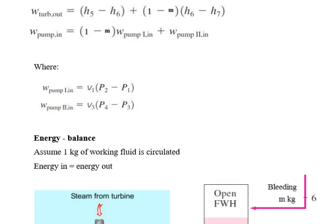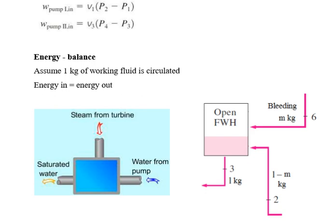Assuming 1 kg of working fluid is circulated, we consider the energy in and energy out. In the open feed water heater, some steam is extracted from the turbine — this process is called bleeding — and enters the open feed water heater. Then 1 minus m kg of condensate is taken from the condenser and mixed in the heater. The steam is converted to saturated liquid and sent to the pump section.